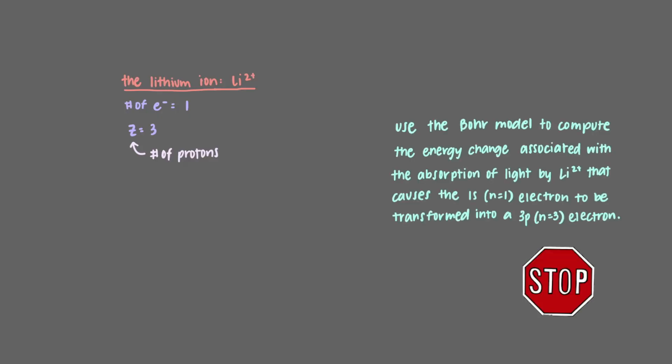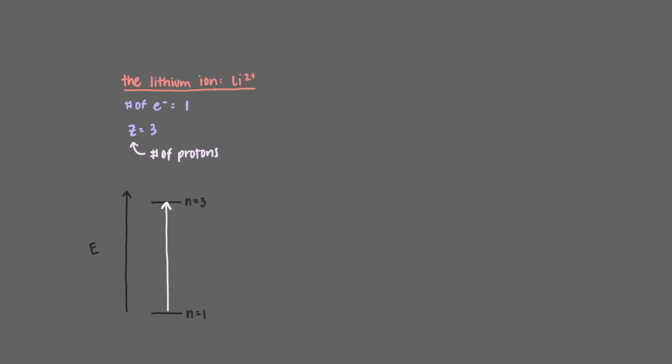Use the Bohr model to compute the energy change associated with the absorption of light by the lithium ion that causes the 1s electron to be transformed into a 3p electron. Recall that all energy changes are delta E equals E final minus E initial, and we know that the energy of a one-electron wave is given by this formula. We start off with our electron as an n equals 1 wave. This is our initial state.